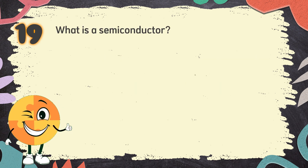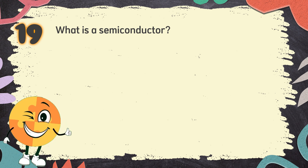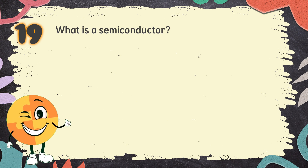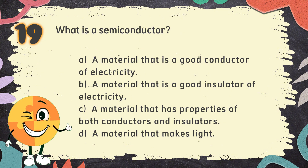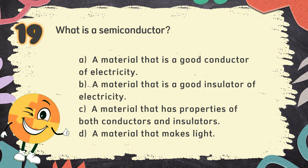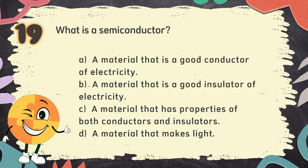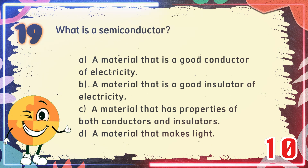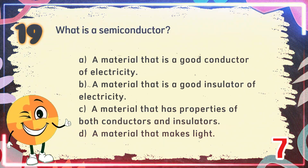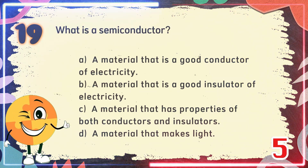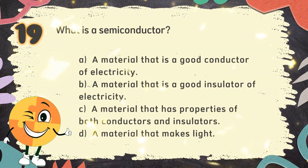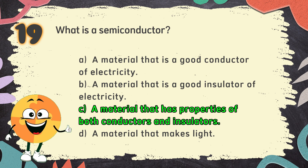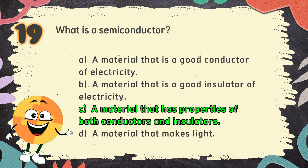Number 19. What is a semiconductor? The choices are: A. A material that is a good conductor of electricity, B. A material that has properties of both conductors and insulators, D. A material that makes light. The correct answer is B. A material that has properties of both conductors and insulators.